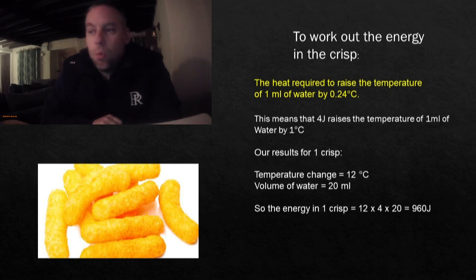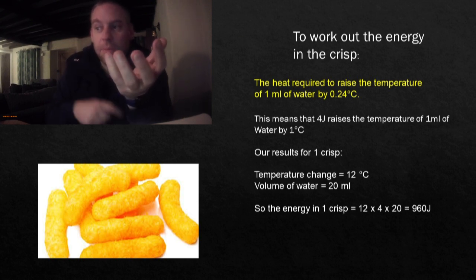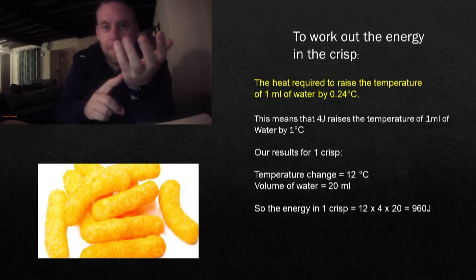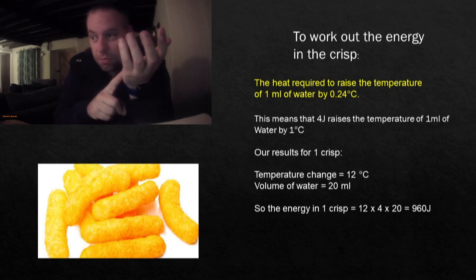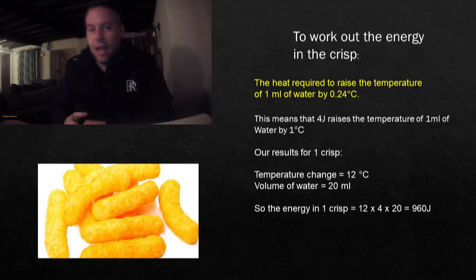For one crisp we had a temperature change of 12 degrees Celsius and we had a volume of 20 milliliters. To work out the energy in the crisp, we take the 12 degrees temperature change, times it by four because each degree Celsius needed four joules, then we take the 20 milliliters of water and times that. That gives us a value for our crisp of 960 joules.